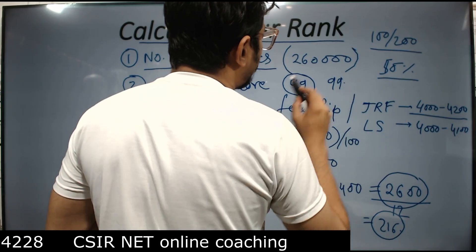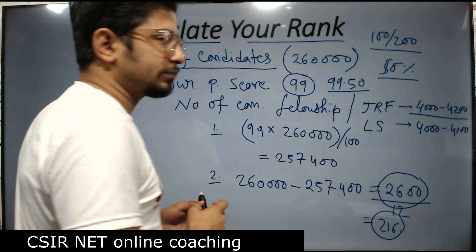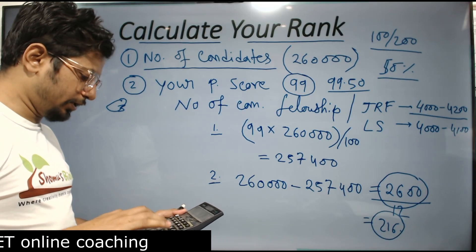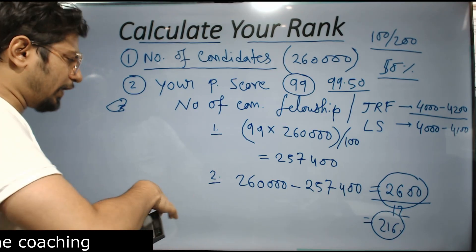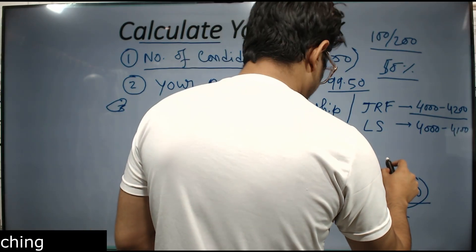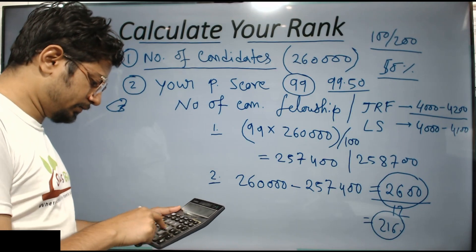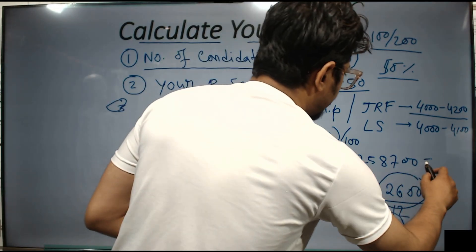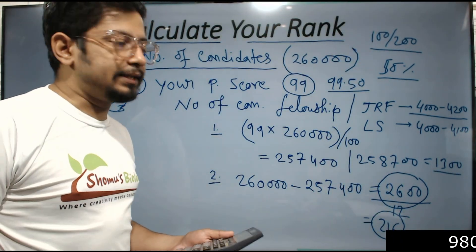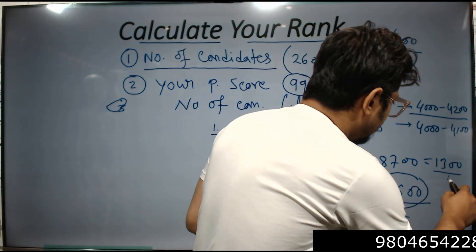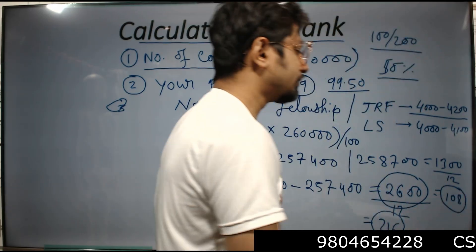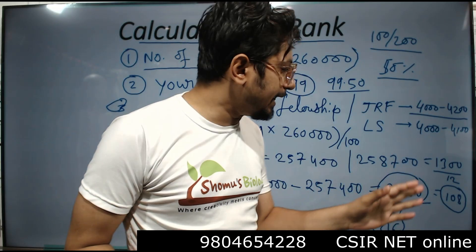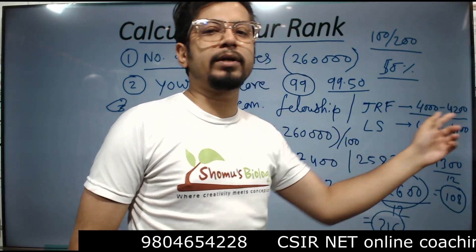Now let's say someone gets 99.5 percentile. Doing the same calculation: 260,000 × 99.5 ÷ 100 = 258,700. Subtracting from 260,000 gives 1,300. Dividing by 12 candidates per rank gives an approximate rank of 108. If the number of candidates per rank is more than 12 — say 15 — your rank will be even closer to the top.